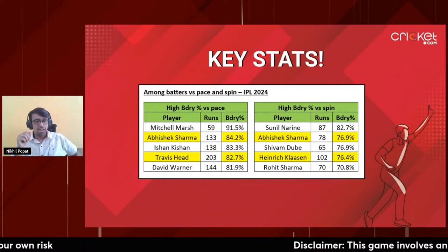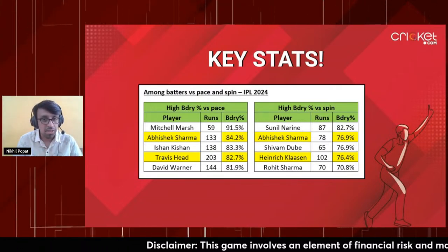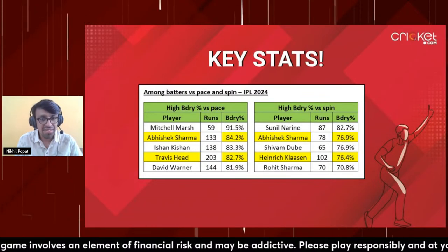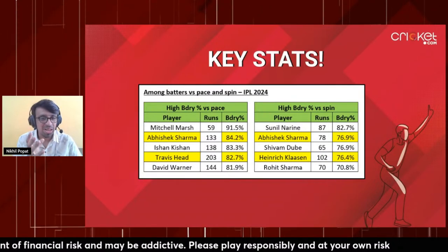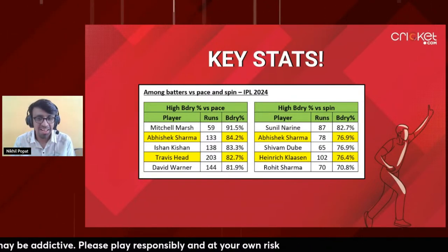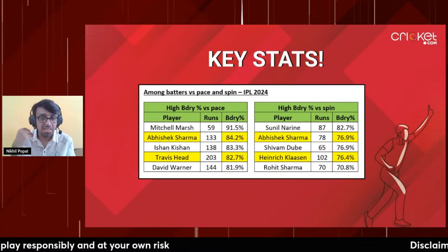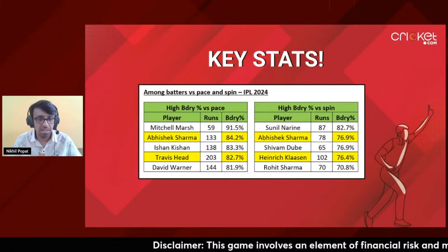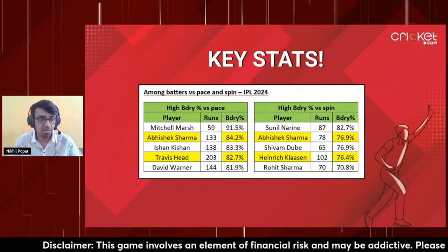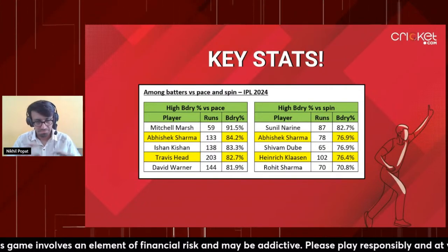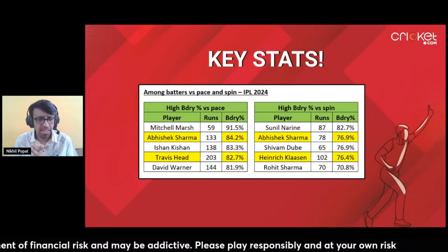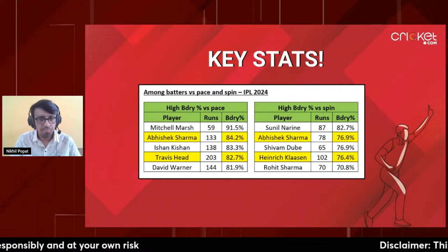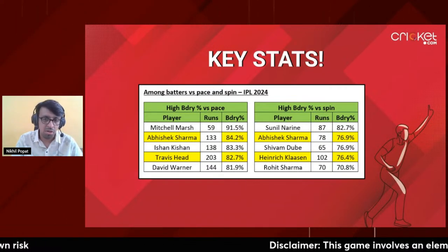This season's highest boundary percentage vs pace: Abhishek Sharma 84%, Travis Head 82% - incredible numbers with 133 and 203 runs respectively. Highest boundary percentage vs spin: Abhishek Sharma 76%, Aiden Markram 76%. So you think you can get away from Abhishek with pace or spin, but no - he's dangerous against both. He's a very good option if he's able to see off Khalil, which I think is the only challenge for him today.